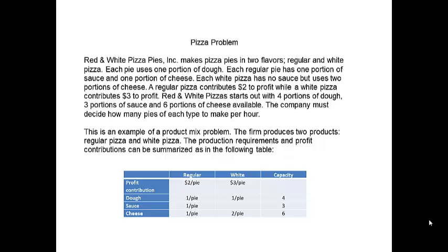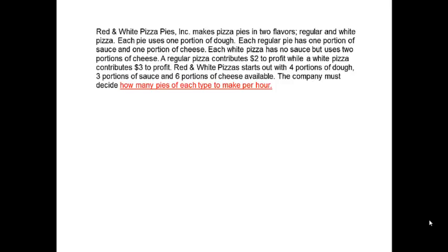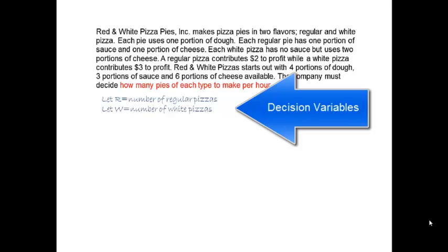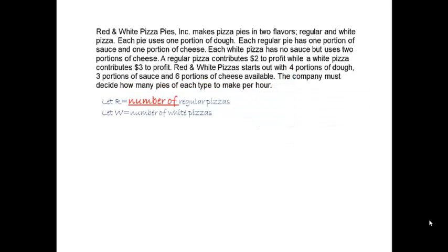The first step in going from a verbal description to a mathematical description is to define decision variables. What is the decision maker's question? What do we want the answer to tell us? We want to know how much of each type of pizza. Since there are two types of pizza, there will be two decision variables. We can represent the number of regular pizzas by R and let W represent the number of white pizzas. Decision variables should be defined in a way that tells how each will be measured. Here the units of measure are the number of pies. The solution to a linear programming problem will be values for the decision variables, telling us the number of regular pizzas and the number of white pizzas.